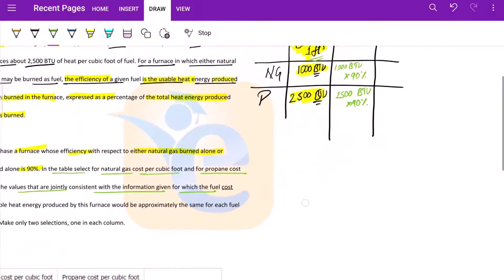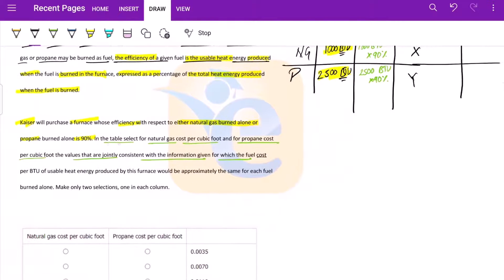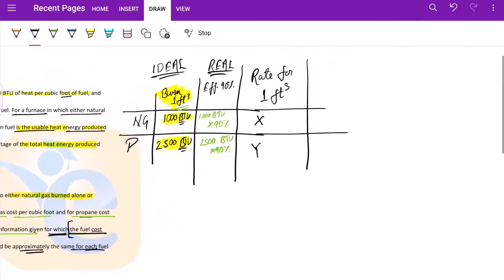So say, for example, let us define the rate for one cubic foot. Say this is x and this is y. Now what do we need in the table? Natural gas cost per cubic foot, propane cost per cubic foot. So this is x and this is y that are jointly consistent with the information given, for which the fuel cost per BTU of usable heat energy produced by the furnace would be approximately the same for each fuel burned alone.